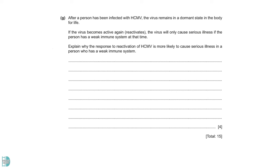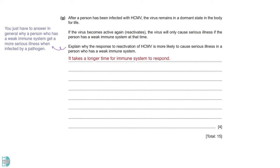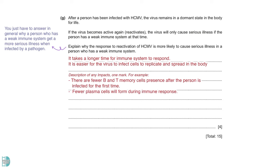Question G wants you to explain why the response to reactivation of HCMV is more likely to cause serious illness in a person who has a weakened immune system. Even though the question sounds specific to HCMV, but the reason why a person with weakened immune system forsakes more easily is the same for all kinds of infectious diseases. So you just have to answer in general what happens when someone doesn't have a normal immune system. A person with a weakened immune system may take a longer time to have an immune response. So, it is easier for the virus to infect cells to replicate and spread in the body.